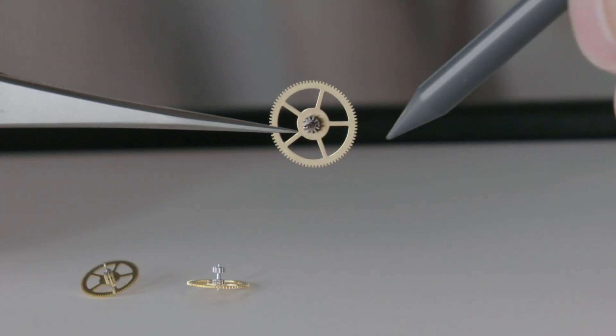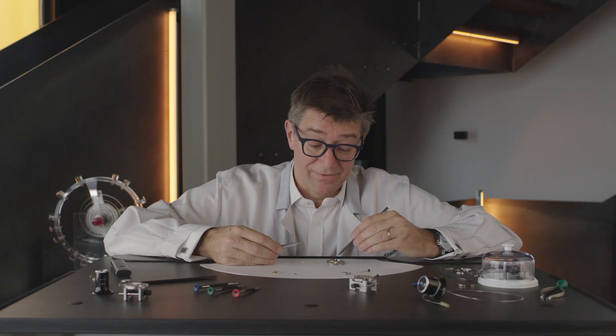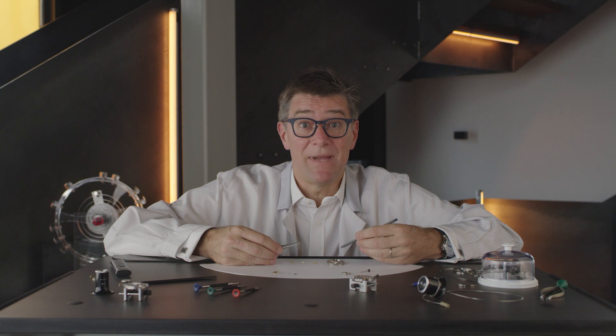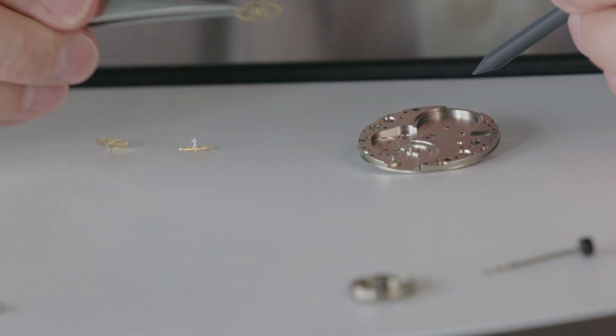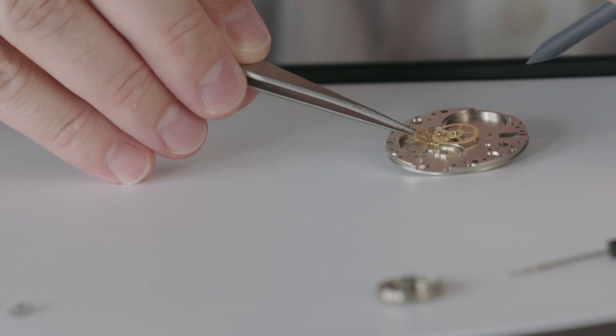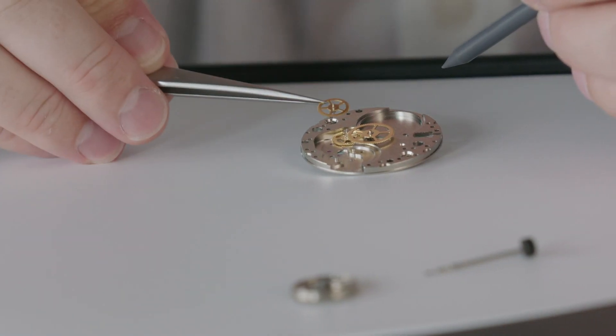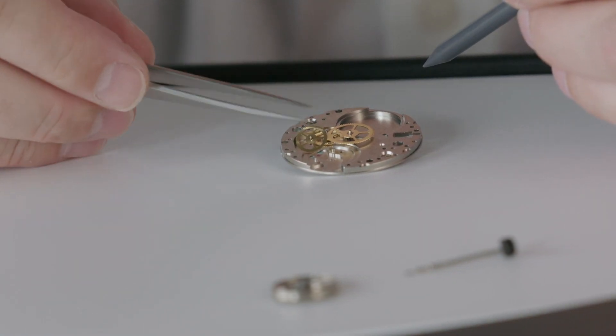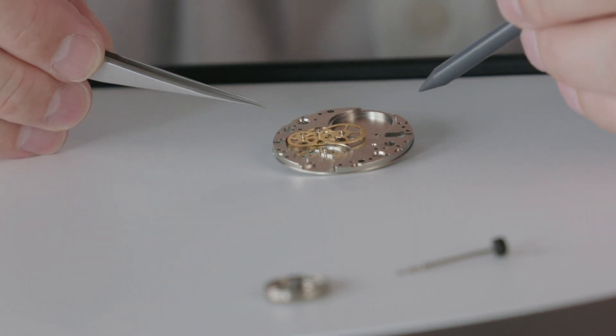This main plate here has been designed to receive the different wheels. Like I will put on it now, one in the center, one just after, and the third one here. This is the gear train composed by three wheels. Each pivot of the wheels will be inserted in small jewels.